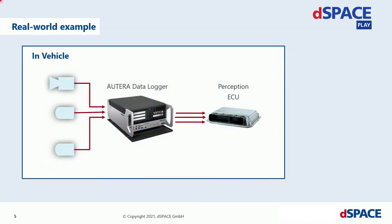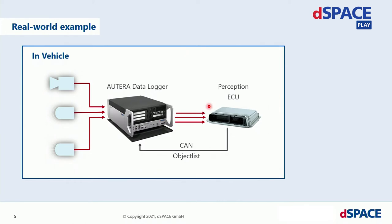So how can this smart logging be implemented? Let's consider this real world example. Here we have our high-end platform for data logging and prototyping — the Autera — inside a vehicle, collecting all the sensor data. We also have a perception ECU; the Autera works as a man in the middle and forwards all the sensor data with low latency. We can establish a CAN communication to feed back the object list into the Autera.